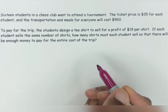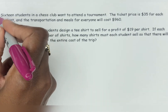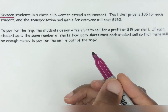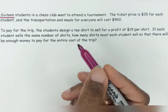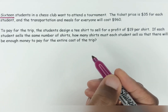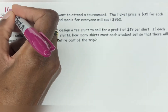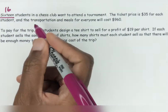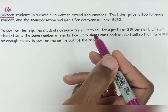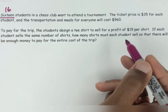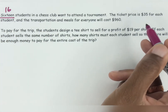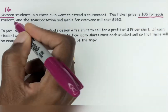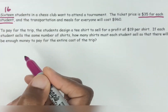So first off, you'll notice that 16 is in words. Sometimes that's done deliberately to throw you off a little bit because the brain is not seeing a number. So you make it a number — that's the 16 students. Any other math in that first sentence? No, right? So the ticket price is $35 for each student, and there's 16 students.